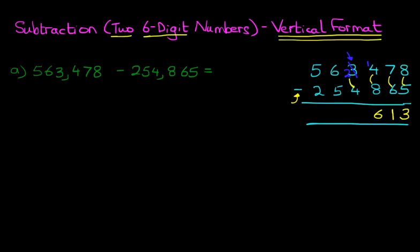Fourteen minus eight is six. Now we're going to do the thousands column: we've got two minus four. Again, two is smaller than four, so we're going to take one from the column on its left — the six. Cross out the six, six minus one is five, and the one we have taken we move across to the thousands column, which now reads twelve minus four.